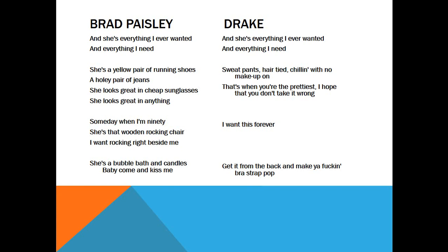Brad Paisley says, 'She's a yellow pair of running shoes, a holey pair of jeans. She looks great in cheap sunglasses, she looks great in anything.' Drake says, 'Sweatpants, hair tied, chillin' with no makeup on — that's when you're the prettiest, I hope that you don't take it wrong.' They're dressing different women and thinking about their different audiences. Drake's version makes much more sense for a rap song, while Brad Paisley's fits more with a country audience.